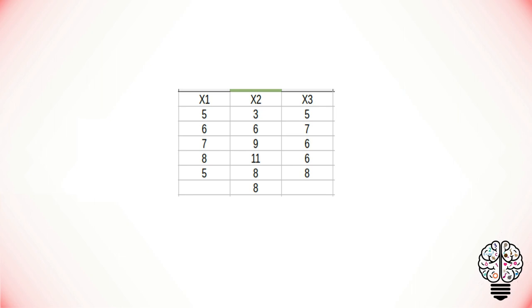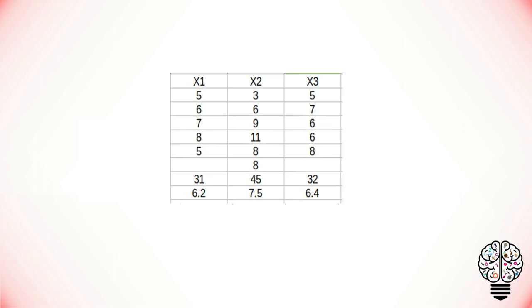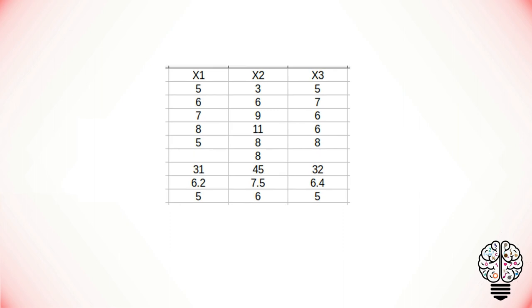have three groups out of which two groups have five values each and one group has six values. With this data, first we have to find the sum of each group and find mean for it, and this column represents the number of values in each group.